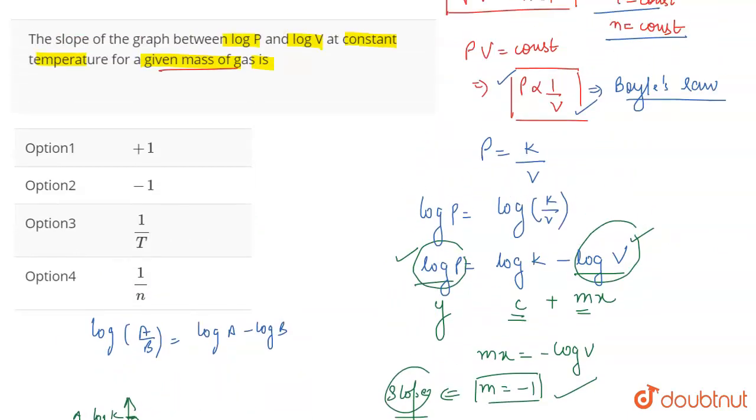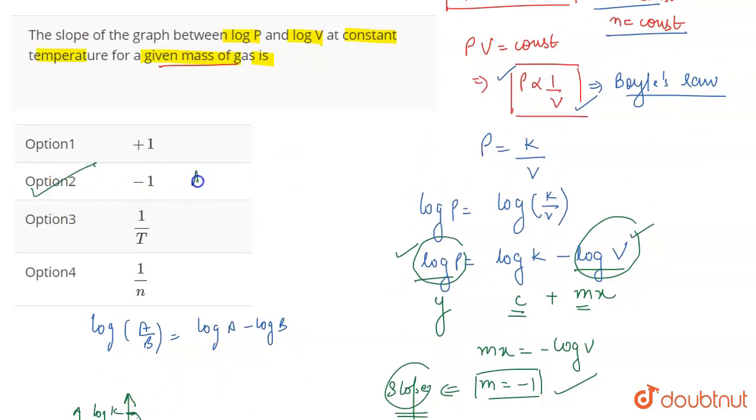And the slope will be minus 1. So, the correct answer for this question is given in option 2. That's all for the question.